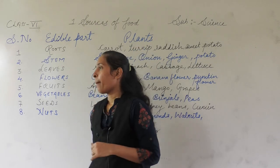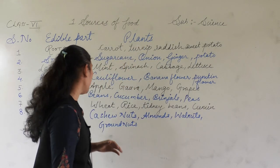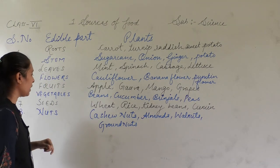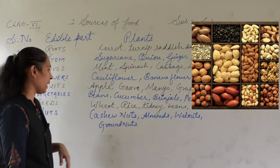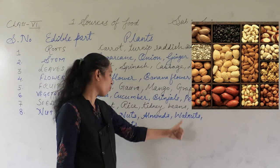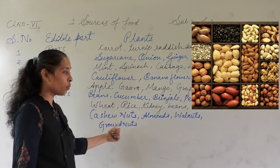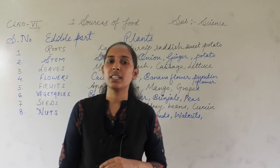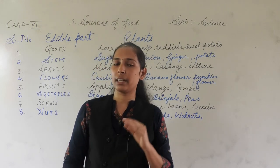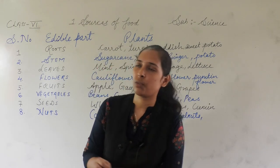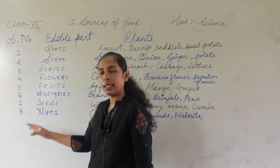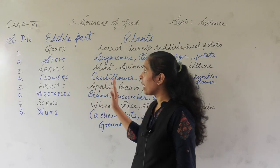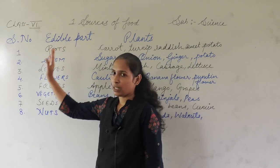The next part is nuts. Nuts are also a part of a plant. The edible nuts include cashew nuts, almonds, walnuts, groundnuts, pistachio, and hazel nuts. All these are different nuts that we eat, and since they come from plants, they are also called edible nuts. This covers all the different parts of a plant that we eat, which are called edible parts.